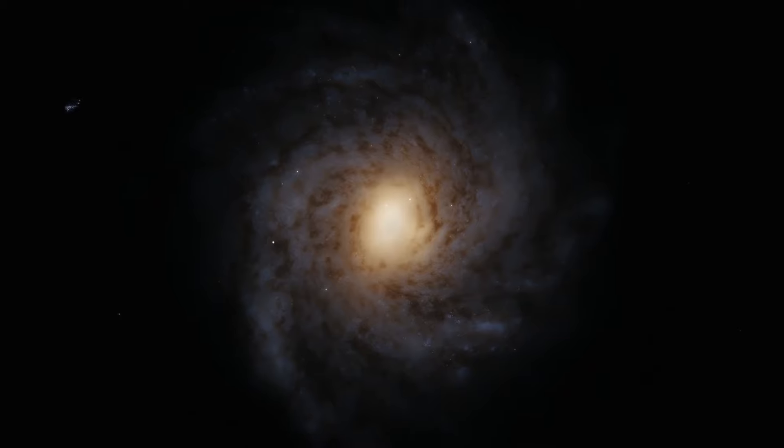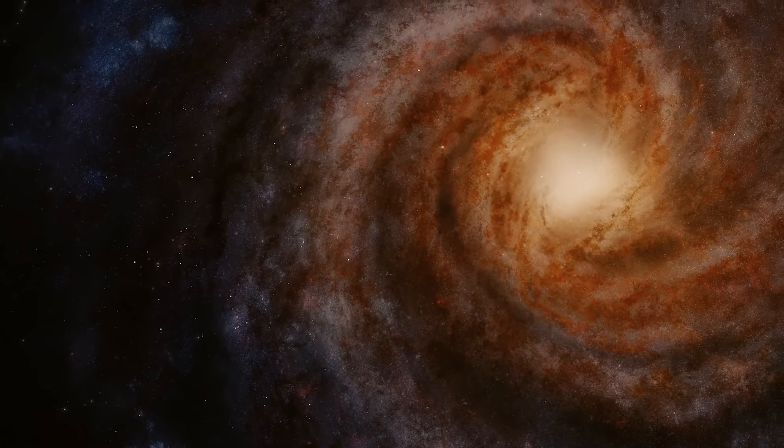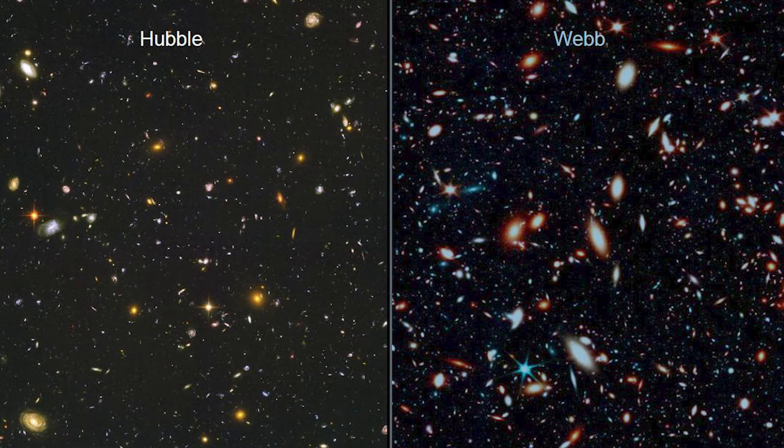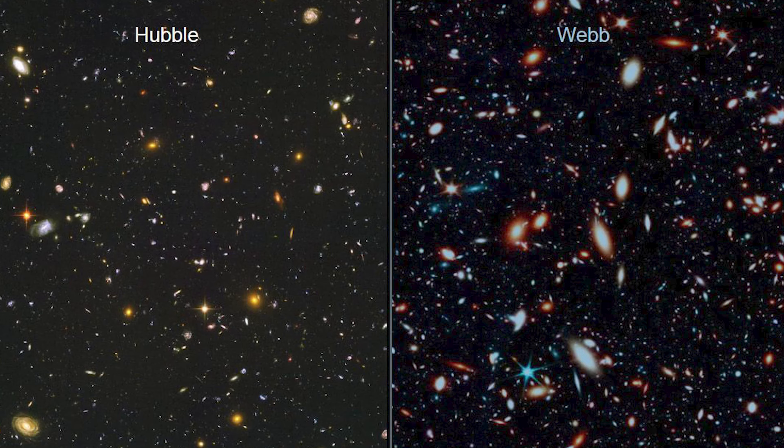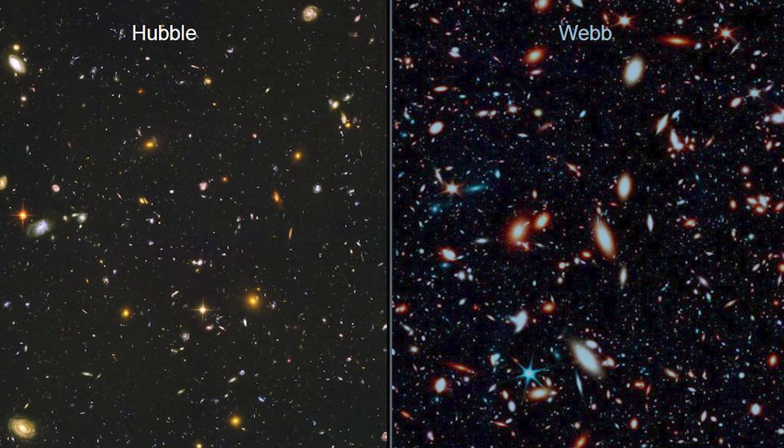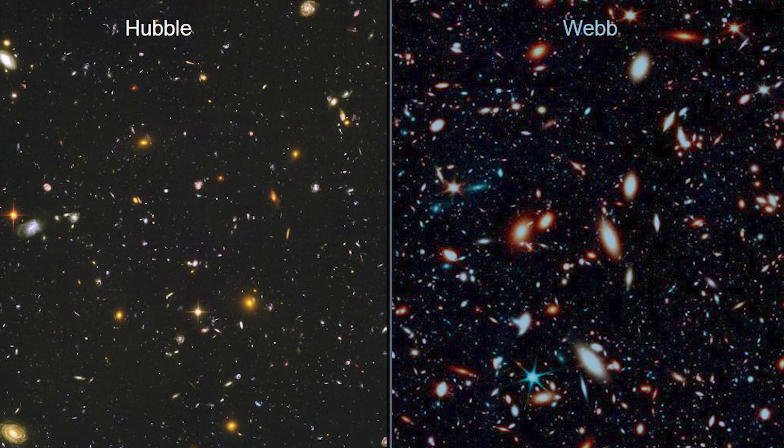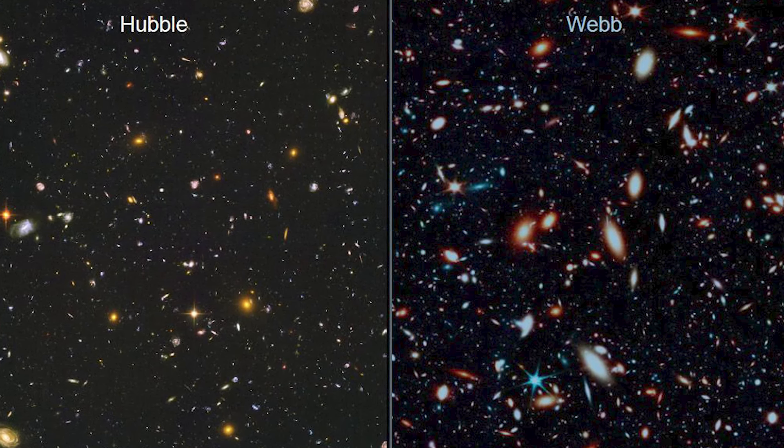There is no denying that scientists who have analyzed the Webb images have discovered small galaxies. When compared to the Hubble images, galaxies with the brightness and mass greater than that of the Milky Way appear to be two or three times smaller in these images. This kind of activity from an expanding universe is quite unexpected if the universe is not expanding.